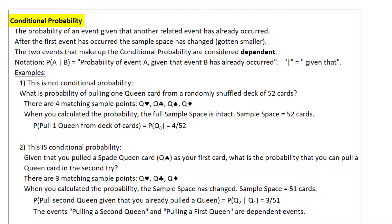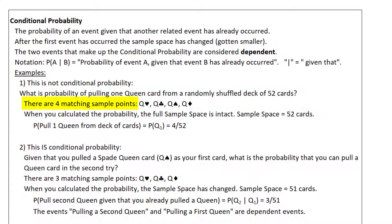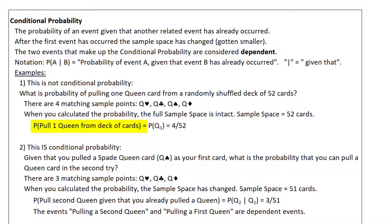To understand conditional probability, let's first look at an example that is not conditional probability. If we ask: what is the probability of pulling a queen card from a randomly shuffled deck of 52 cards? Well, there are four matching sample points — 1, 2, 3, 4. When you calculate the probability, the full sample space is intact; sample space equals 52 cards. So the probability of pulling one queen equals 4 divided by 52.